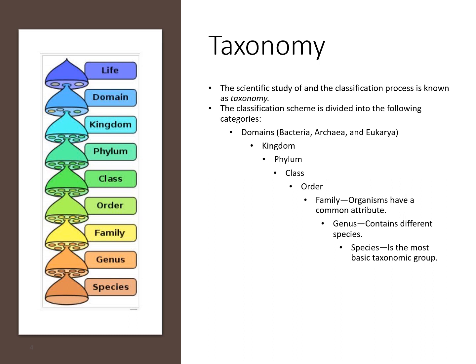Any organism can fall into this classification scheme. First you start with life and then move down to domain, which has three categories: bacteria, archaea, and eukarya. Then it's divided into kingdom, phylum, class, order, and family. Within a family, organisms have very common attributes. It's further divided into genus, and one genus can have several species. The species is the most basic taxonomic group.